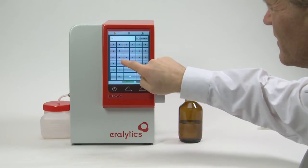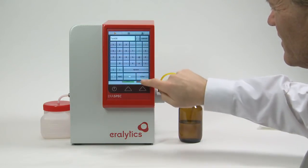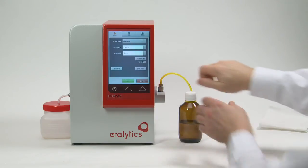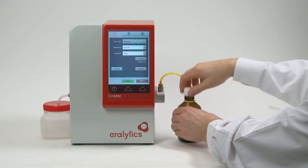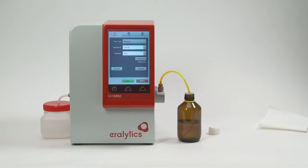Enter the sample ID and the operator on the pop-up keyboard or select them from the drop-down list of previously entered names. Then insert the filling tube into the sample container and press run.